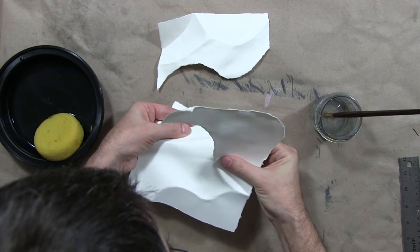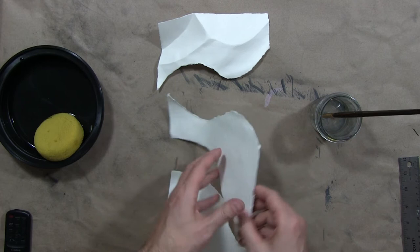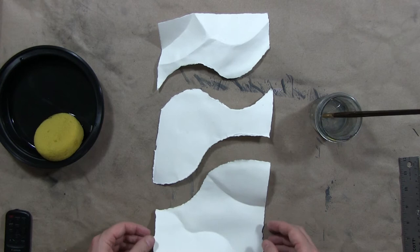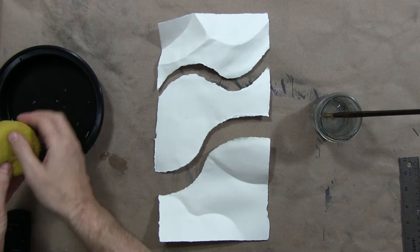The curved fold has actually broken the surface tension, and sometimes that releases the sizing of the paper, and it makes it really easy to just tear along that seam. This would make a really interesting ground for a drawing.